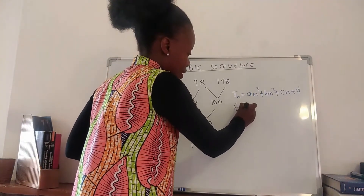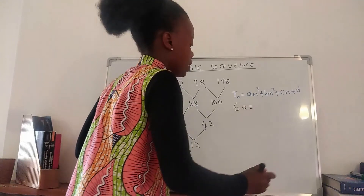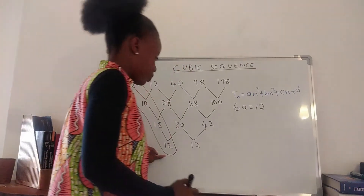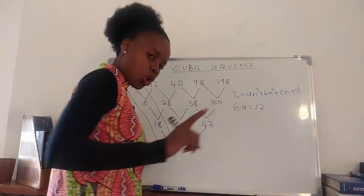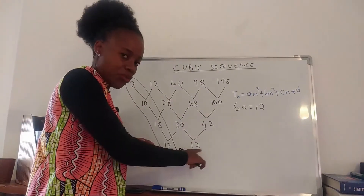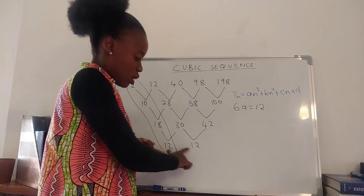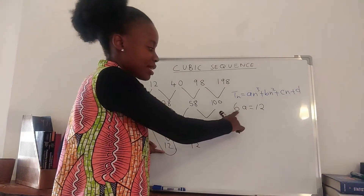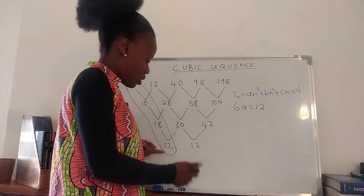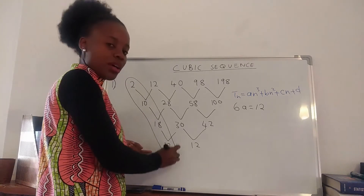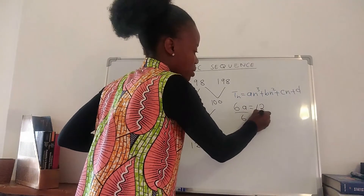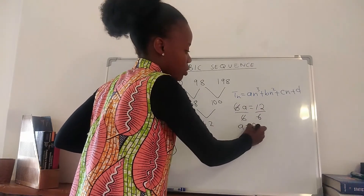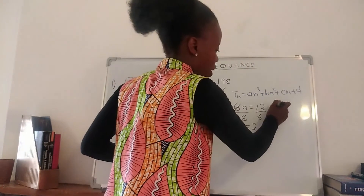To find a, we know that 6a equals the third difference, which is 12. So 6a = 12. We divide both sides by 6 and our a equals 2.